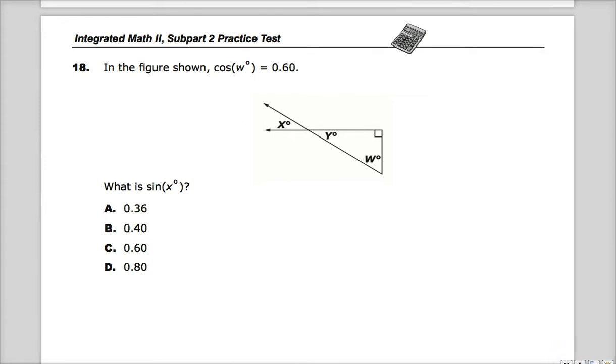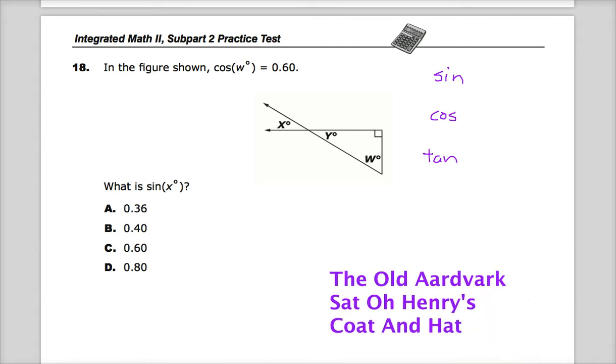When working with trigonometric ratios, I always want to know what sine's value is, what cosine's value is, and if I need it, what tangent's value is. Some people use SOHCAHTOA. When I was in school we learned 'the old aardvark sat on Henry's coat and hat,' which told me everything I needed to know.